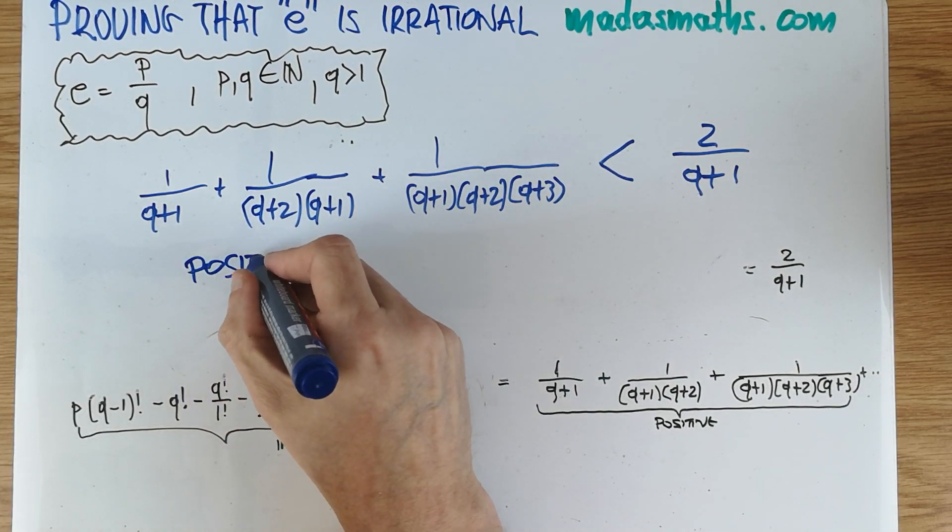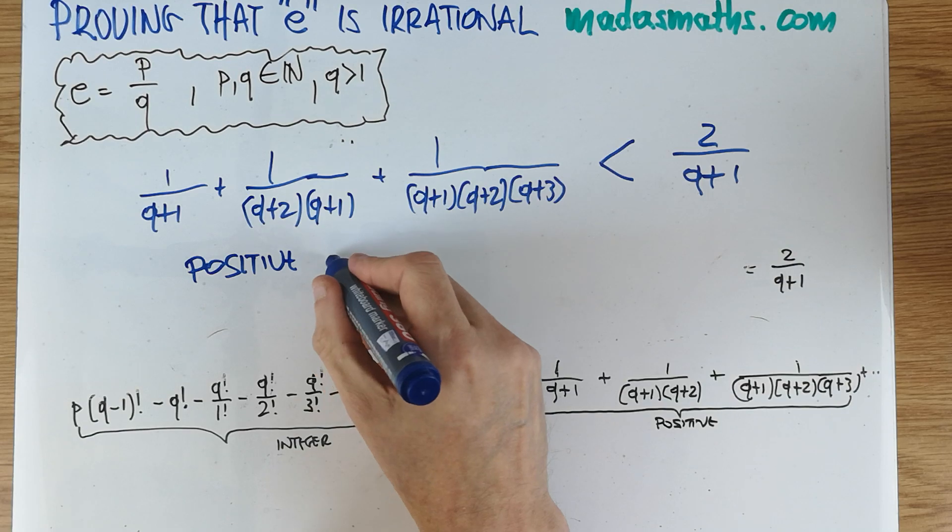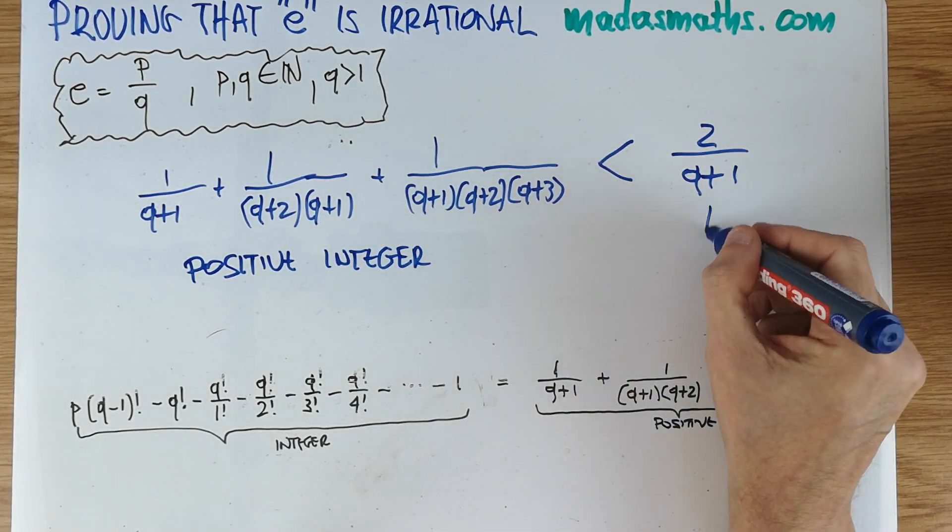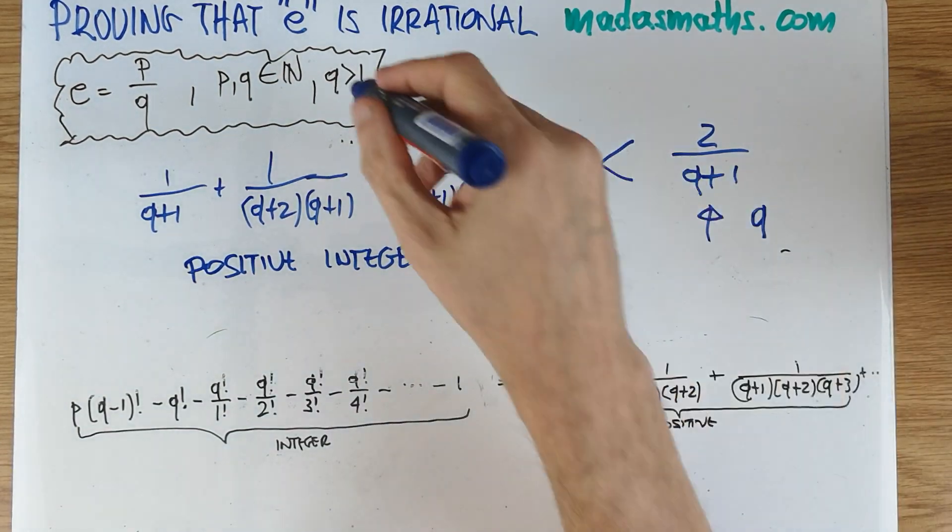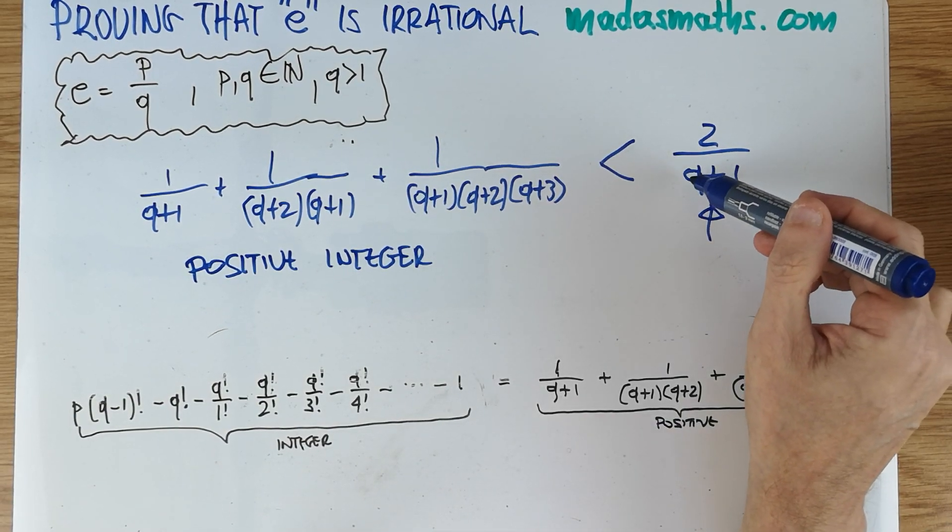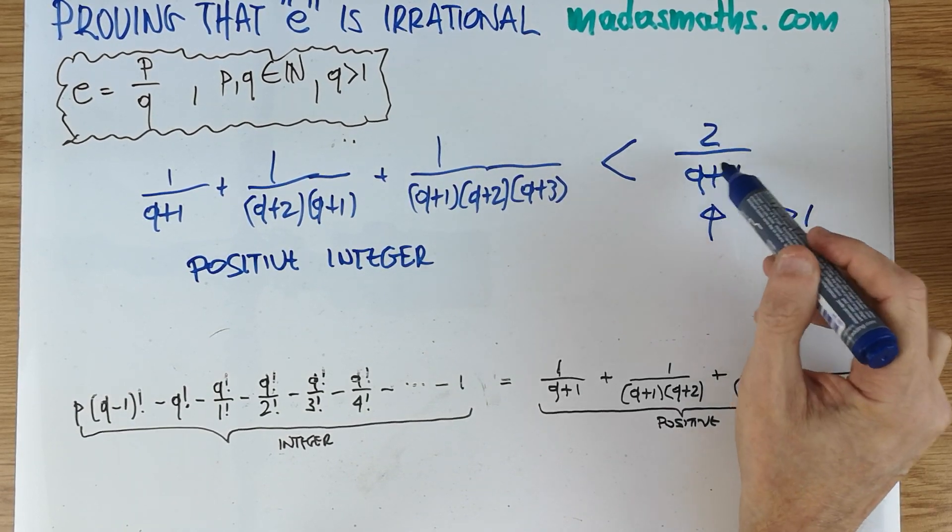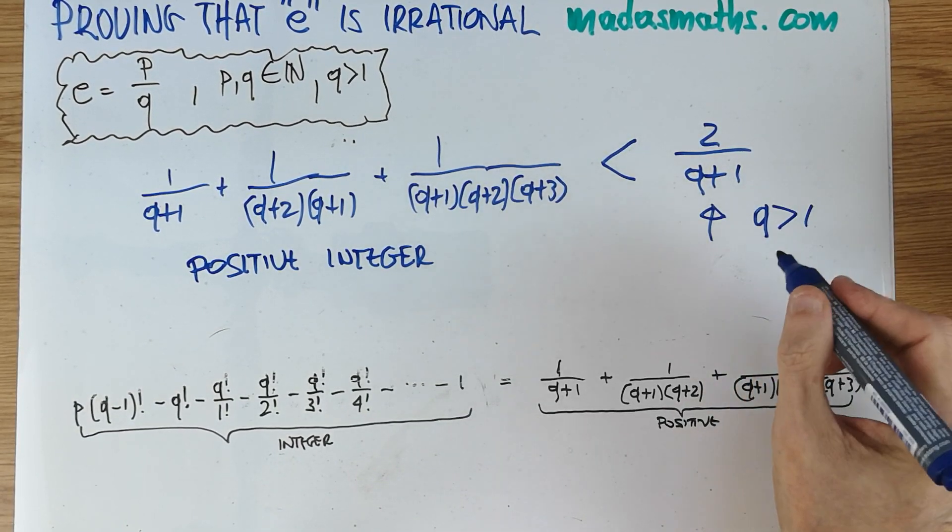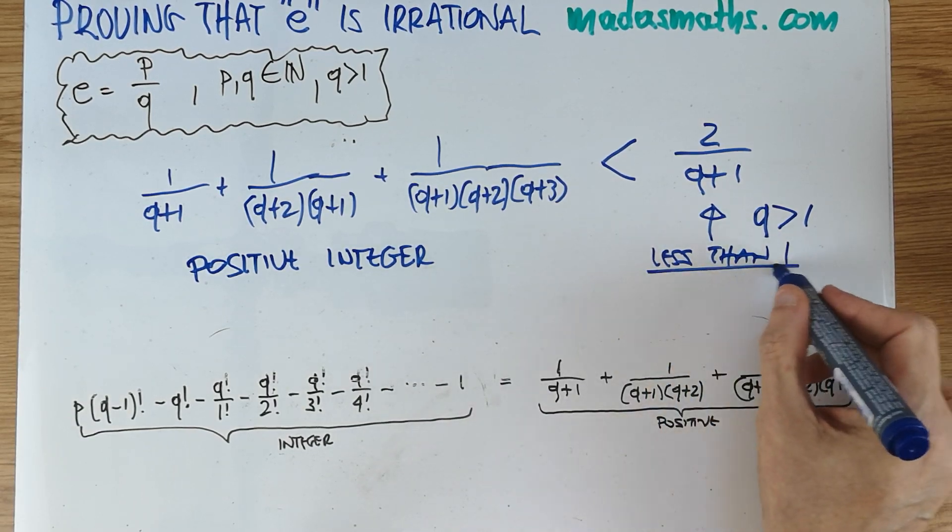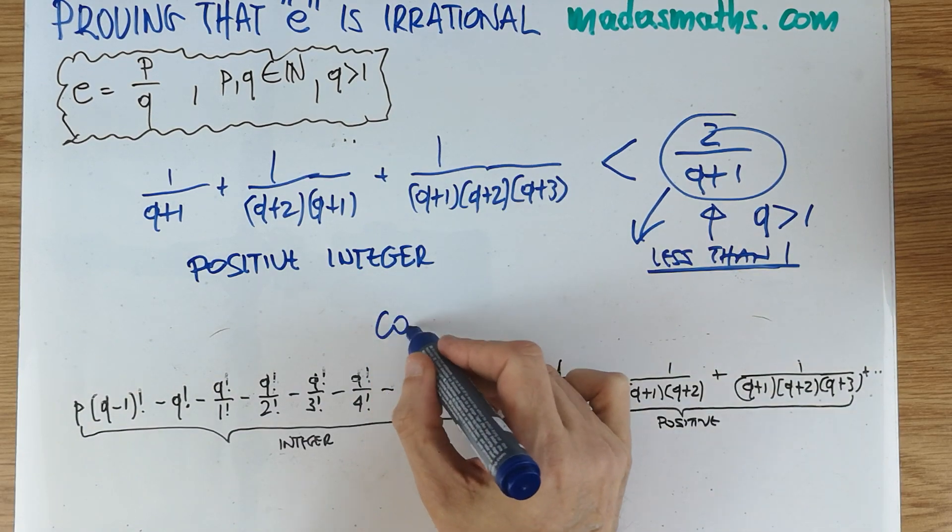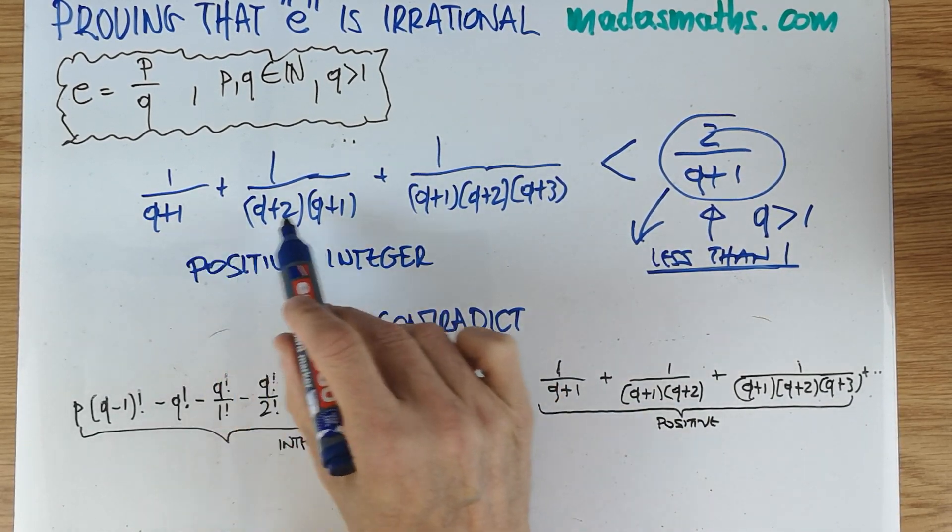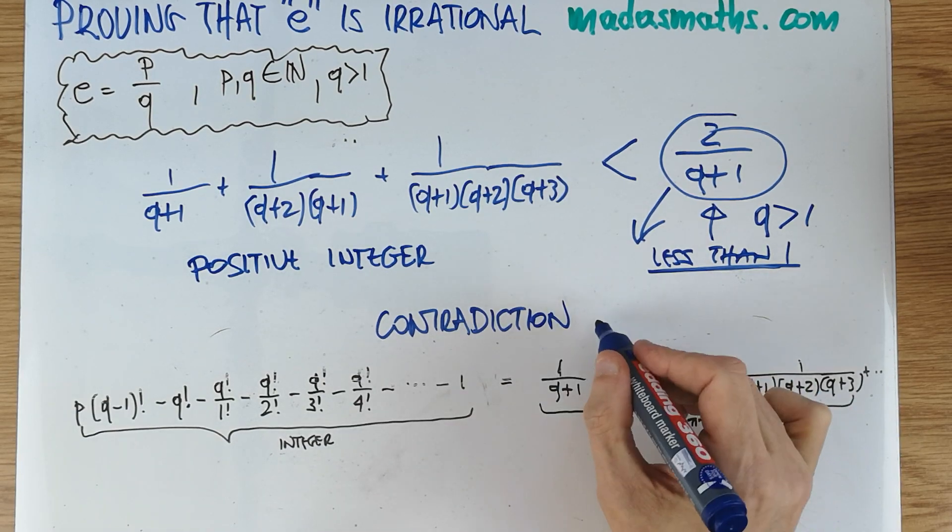This says from this line here, I'm a positive integer. But now this is a problem. q is bigger than 1, which means if it's bigger than 1, call it 2, call it 3, call it 4, call it 5, whatever you want to call it, 2 fifths, 2 ninths, 2 whatever, this is less than 1. So this quantity is less than 1, we have a contradiction. The contradiction is of course, we just found a positive integer, which is this bit here, which is less than 1. There isn't such thing. Contradiction.